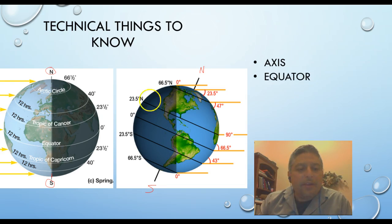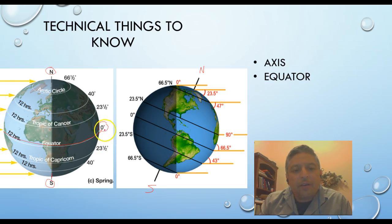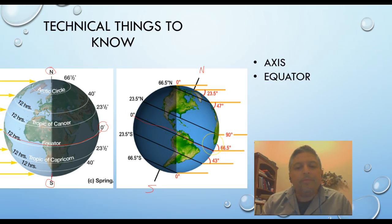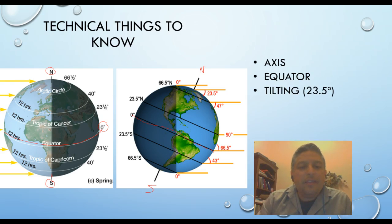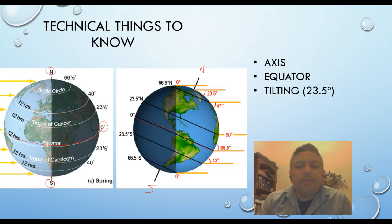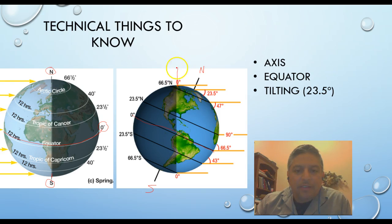The equator is this one over here in the middle. It's another imaginary line but this one is pointing at our zero degrees. It's also located on this one over here. That is the equator.